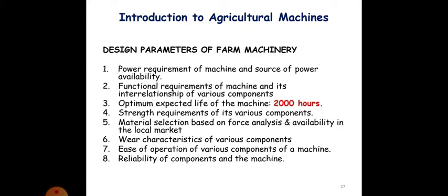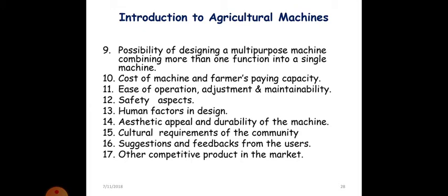Some more farm machinery design parameters: possibility of designing a multipurpose machine combining more than one function into a single machine, cost of the machine and farmers paying capacity, ease of operation, adjustment and maintainability, safety aspects, human factors in design, aesthetic appeal and durability of the machine, cultural requirements of the community, technology, suggestions and feedback from the users, other competitive products in the market. You must have all these 17 parameters in mind when you are trying to design any kind of farm machinery implement.